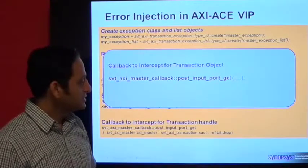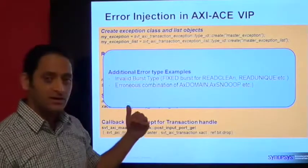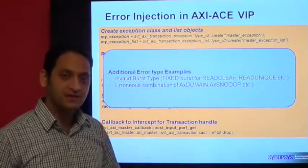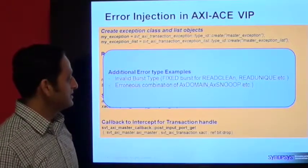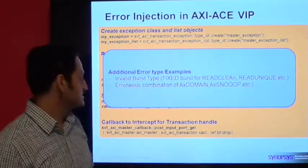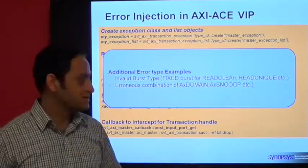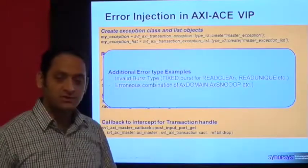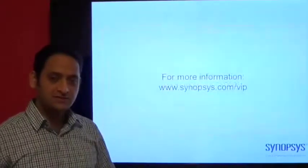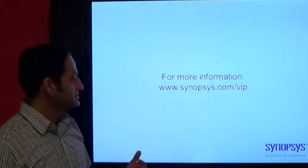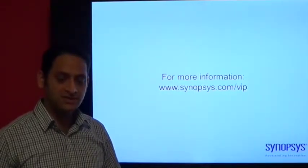For more feature-specific details you can go to the VIP documentation. However, here are some examples of additional exception types which can be executed on the bus — for example, invalid bus type, erroneous combination of domain, snoop, etc. For more information on VIP please go to www.synopsys.com/VIP.